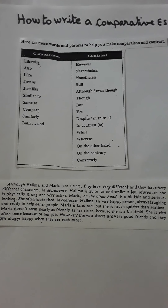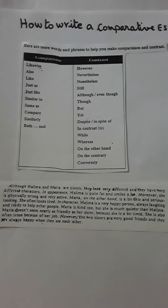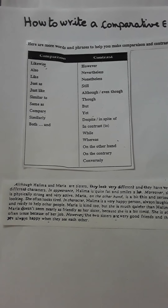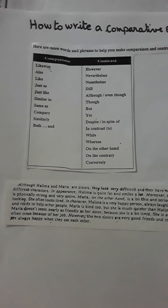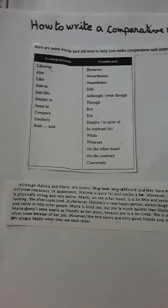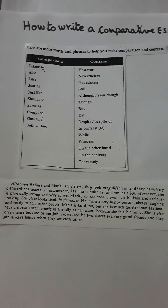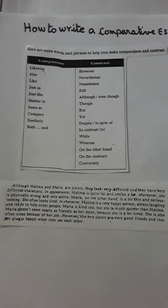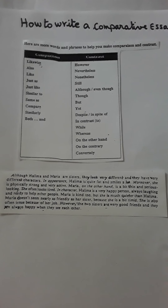On the board you have two columns: one is called comparison and the other is called contrast. When you compare, you deal with things which are similar — to introduce similarity we use expressions like just as, just like, same as, similarly, both, and. When we talk about differences, we use expressions of contrast like however, nevertheless, still, though, but, yet, and so on that you see on the table.